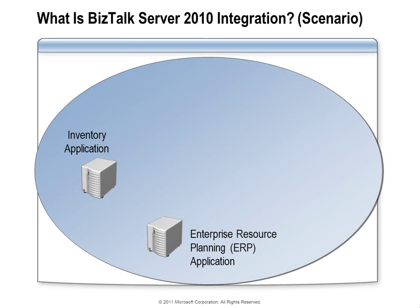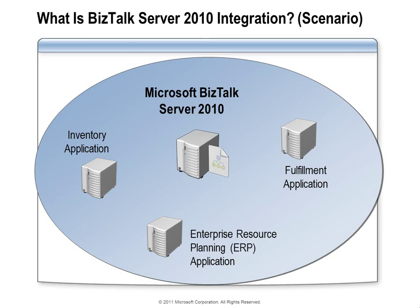When the ERP system looks at the request for the order, it will send that to a fulfillment application. The fulfillment system will go about acquiring the product or material required, and when it completes its task, that inventory item will be back to acceptable levels. For this discussion, the fulfillment application is running on a Windows platform and the ERP application is running on a Unix box. We could probably cobble something together, but we'd encounter those difficulties we talked about. How can BizTalk help us out?